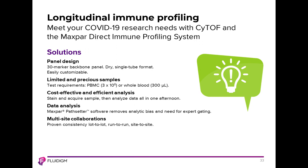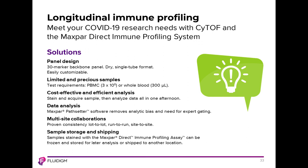The Maxpar Direct Immune Profiling System has been demonstrated to have very good consistency from lot to lot, run to run, and between sites. There have been peer-reviewed papers demonstrating the power of mass cytometry to bring consistency to multi-site collaborations. We've also demonstrated the ability to stain cells with the Maxpar Direct Immune Profiling Assay and then immediately freeze the samples, stored up to four months, with analysis after four months of freezing basically recapitulating the results from samples analyzed initially upon staining without freezing.